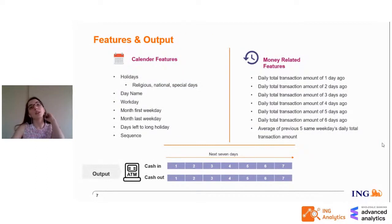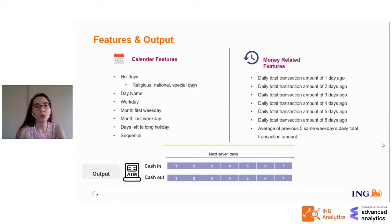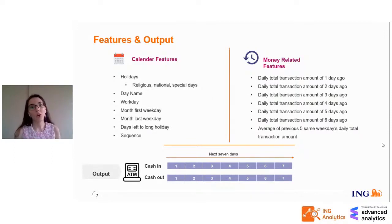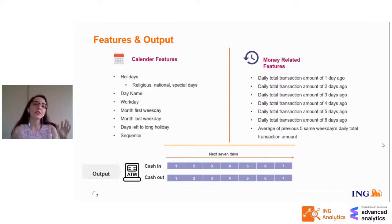Let's look at the features we use. Features fall into two categories: calendar features and money-related features. Calendar features include holiday flags for religious and national holidays, special day flags like Mother's Day or Valentine's Day, day name, workday flag, first and last weekday of the month, a feature counting days left until a long holiday starting from five days earlier, and a sequence feature defining whether the previous two days and current day are workdays. Money-related features include transaction amounts up to six days ago and the average of the previous five same-weekday daily transaction amounts. The output is cash-in and cash-out predictions per ATM for the next seven days.